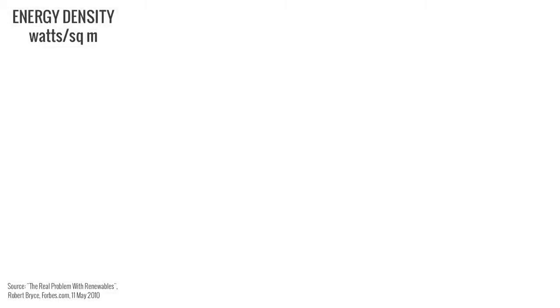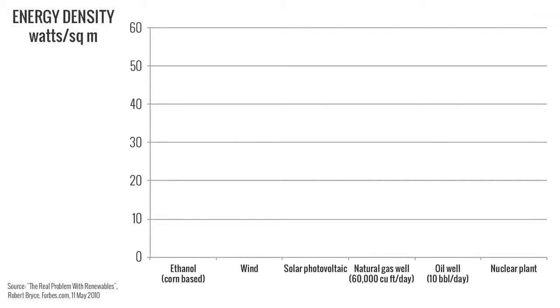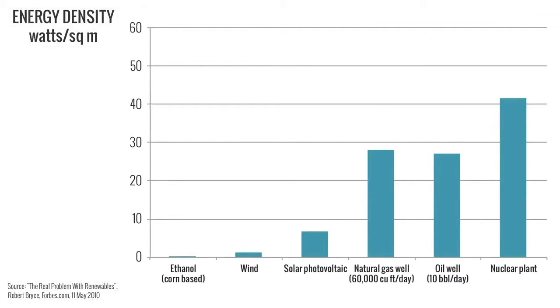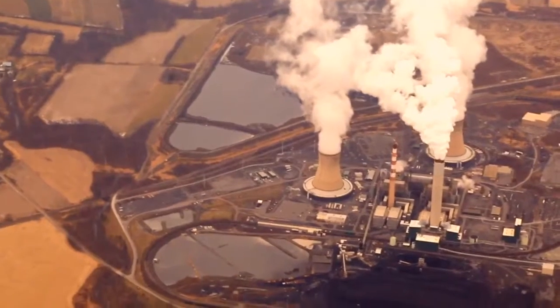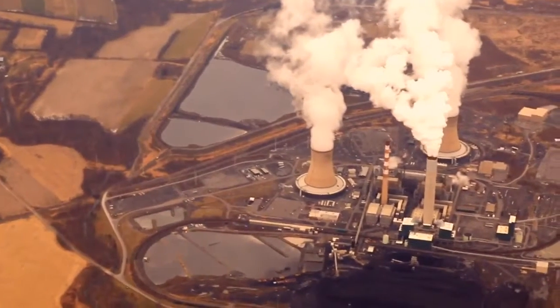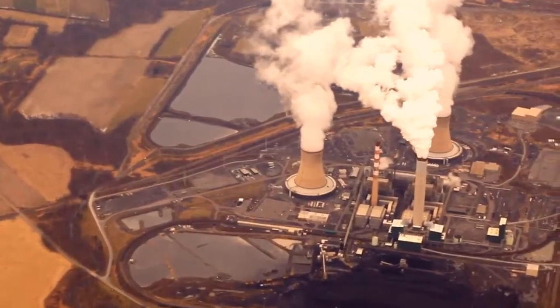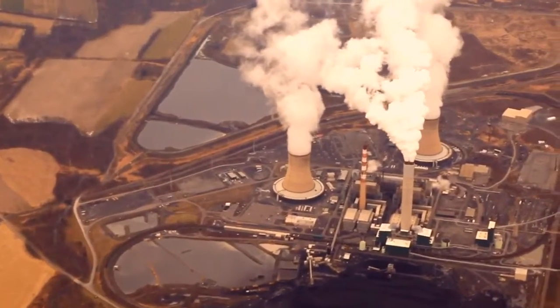Another way to look at energy density is how much land area it actually takes to produce a given quantity of energy. This information is provided in watts per square meter, where a watt is a widely used unit of power. At the high end of this scale, a nuclear plant produces 56 watts per square meter.